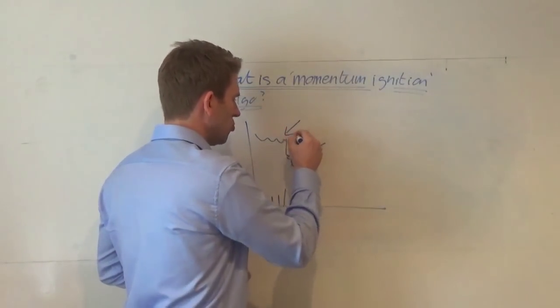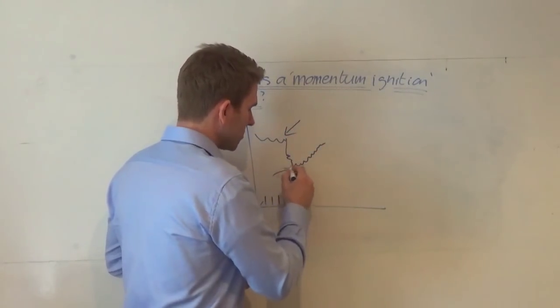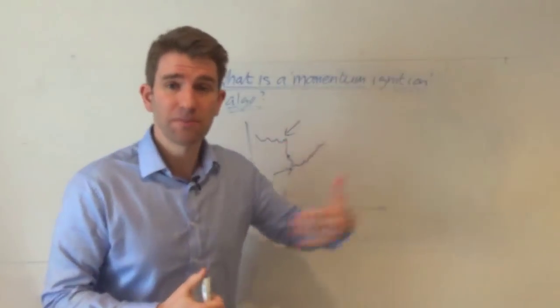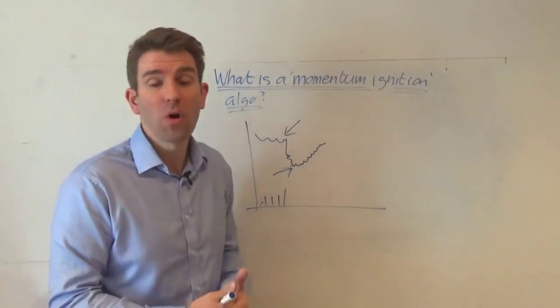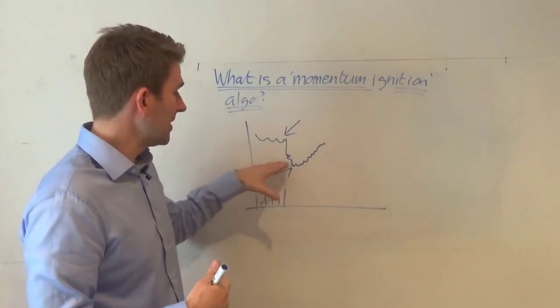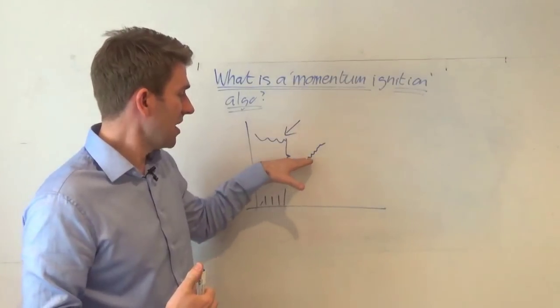So they will create that momentum ignition, other algos will jump on it thinking it's moving. In best case scenario that carries on, the worst case scenario for these guys or the likely scenario is that this kind of then stalls a bit and it will drift back to where it was before.